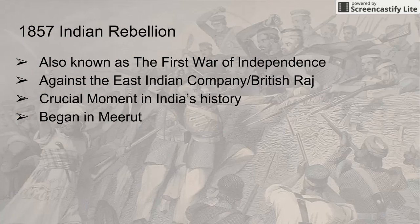The Indian Rebellion of 1857, also known as the First War of Independence, was against the East India Company, or the British Raj. It was the most crucial moment in India's history and began in Meerut.